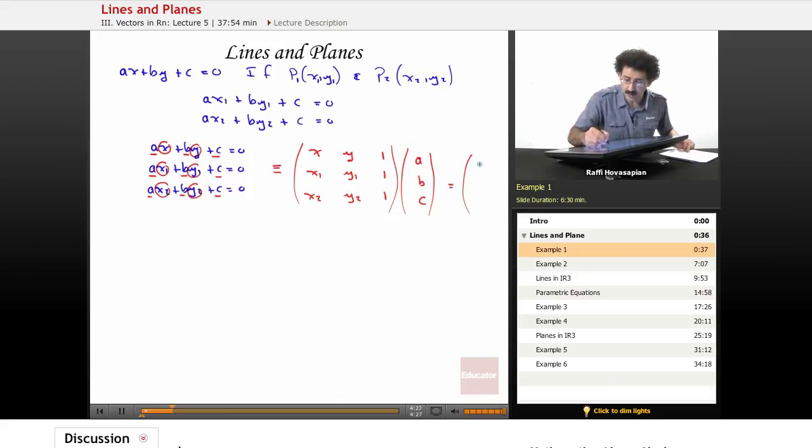And that's equal to, well, zero, zero, zero. Again, it's zero on the right. So this is a homogeneous system. And this is the matrix representation. So given two points and this equation that we know, we can set up this homogeneous system. And now we know how to solve this.